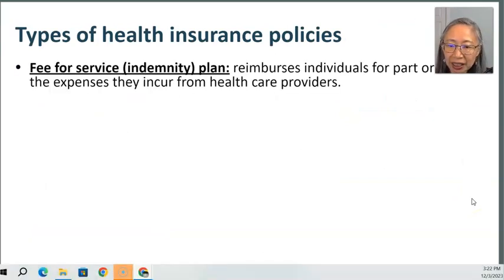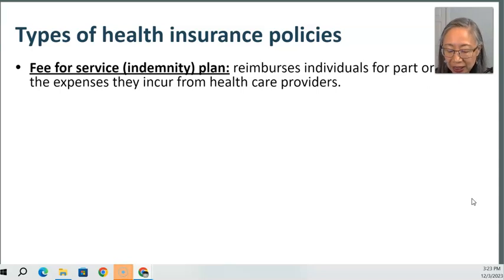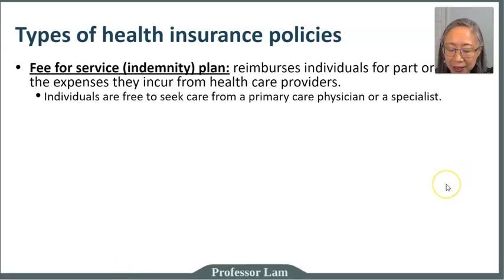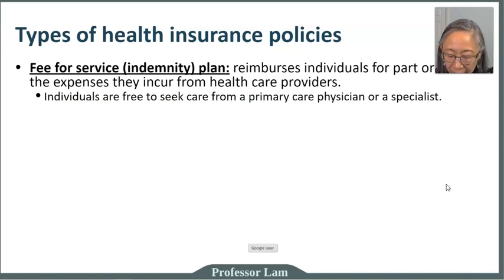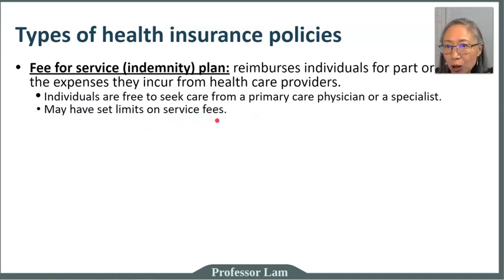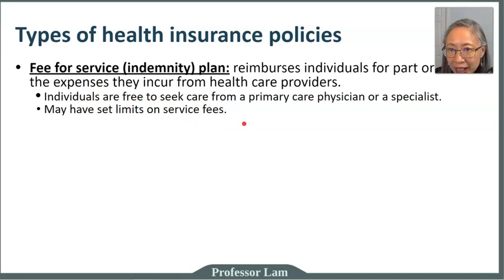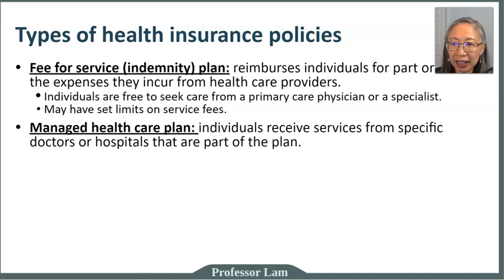One type of insurance policy is called an indemnity plan. What this type of policy does is reimburse you for part or all of your expenses — it's a fee-for-service type policy. Under this type of plan you can choose any provider you want, whether it's a primary care doctor or a specialist. However, the insurance company may have a limit on how much they pay, so if your doctor charges a higher fee than the insurance limit you will have to pay the difference. There's no restriction on which doctor you see, but there is a limit on how much they will pay.